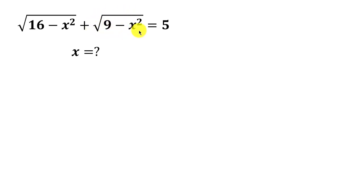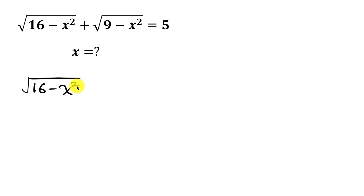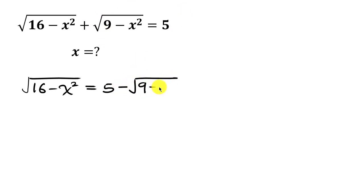So that we have the square root of (16 minus x squared) remaining on the left, equal to 5 minus the square root of (9 minus x squared). Now to get rid of this square root we have to take the square of both sides.